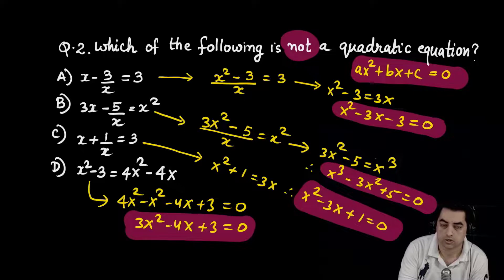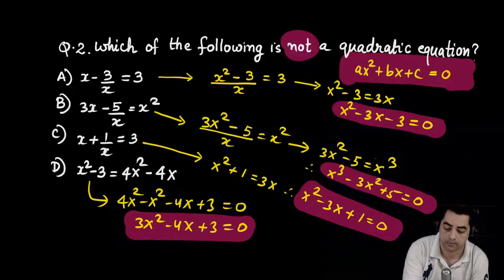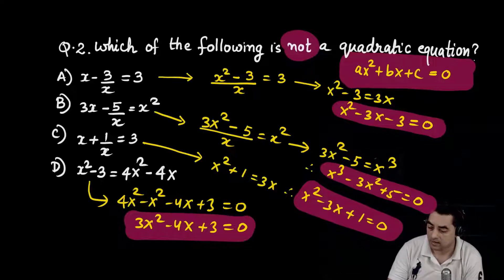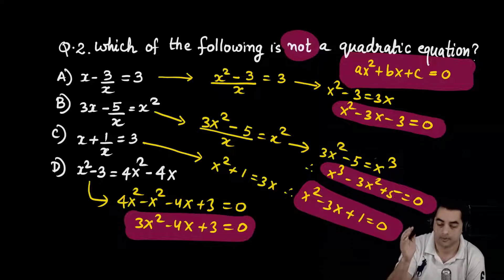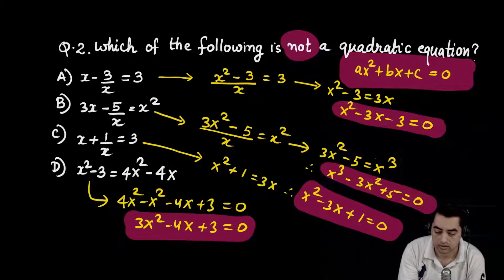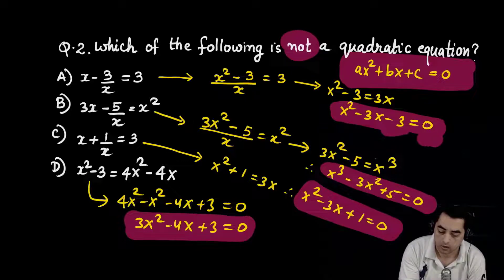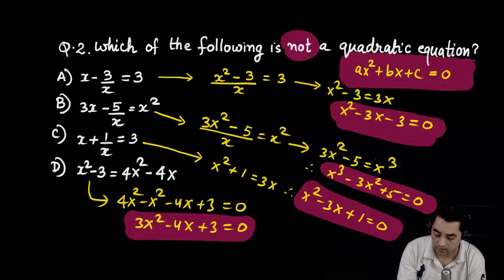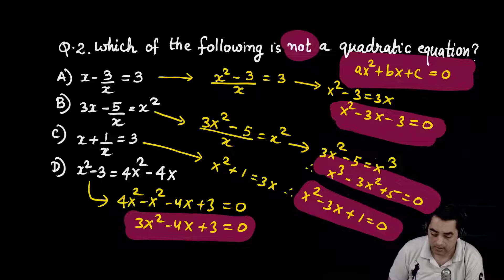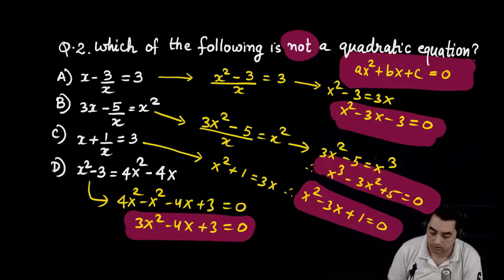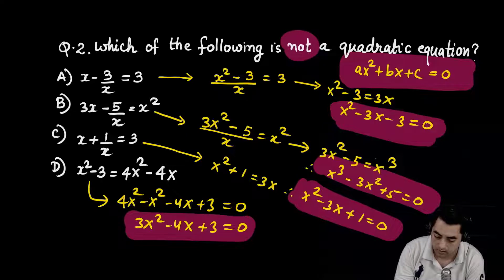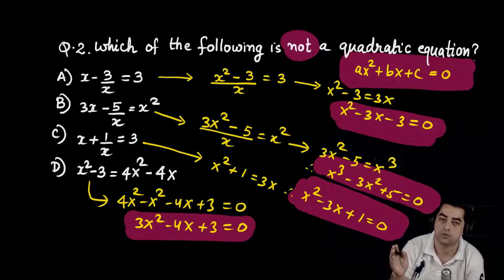Solution for question 2: for an equation to be quadratic it must follow the form ax² + bx + c. We solved all four options. Option A simplifies to x² - 3x - 3 = 0, which is in ax² + bx + c form. Option B simplifies to x³ - 3x² + 5 = 0 — this is not a quadratic equation because the highest power of x is 3.